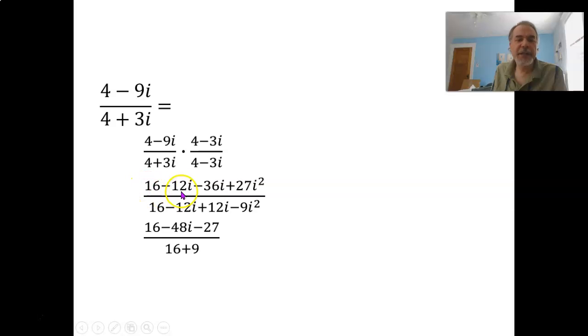Let's simplify those. The numerator simplifies into 16. Combine the i terms and get minus 48i. Turn the i squared into a negative 1 and get minus 27. The denominator simplifies into 16. The i terms cancel each other out. Turn the i squared into negative 1 and then this would be minus a negative or plus a positive 9. Combine like terms, the 16 minus 27 is negative 11. And down here, the 16 plus 9 is 25. So we've got negative 11 minus 48i over 25. And we're pretty much done. The real part is negative 11 over 25. And the imaginary part is negative 48 over 25 that's being multiplied by the i.